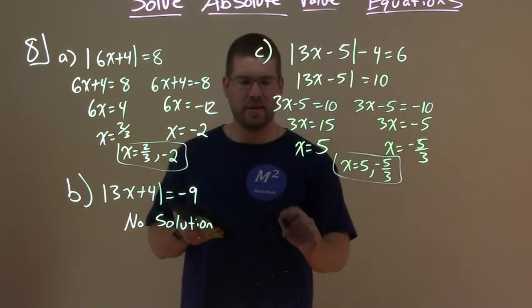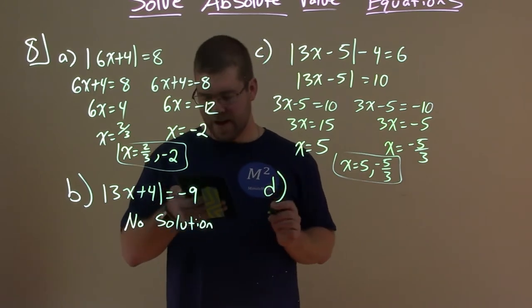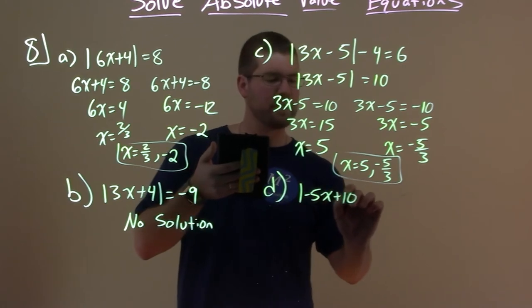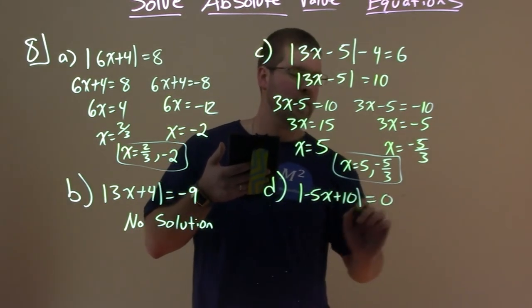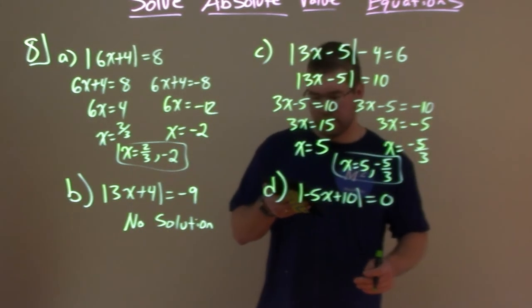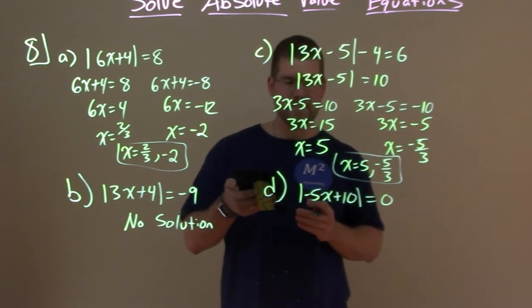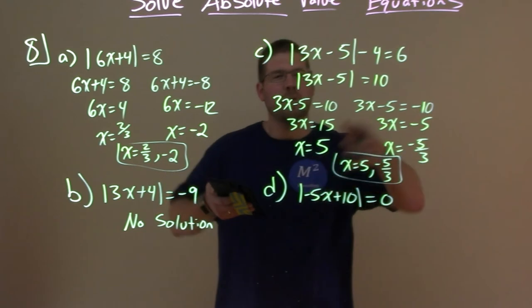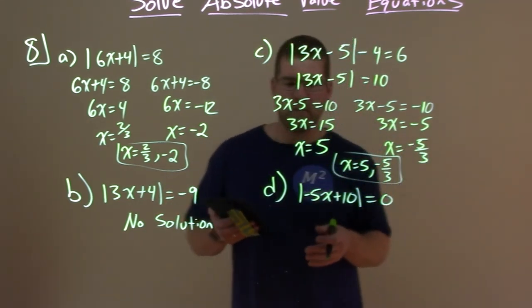Lastly, but certainly not least, let's go with absolute value of negative 5x plus 10 equals zero. So the equation is set equal to zero. So we know we're only going to have one equation here. We can't really do a plus or minus zero. Right. So that's what they told us in one of our rules. Funny how we did all the different types of rules here.